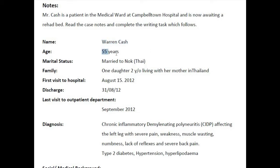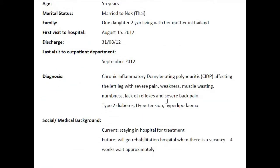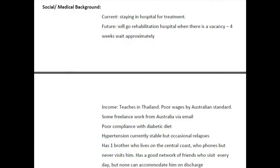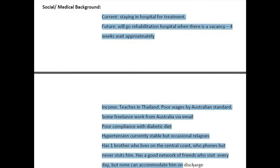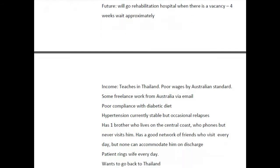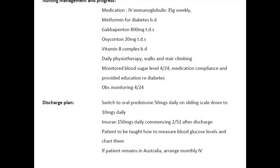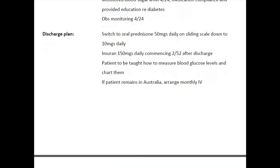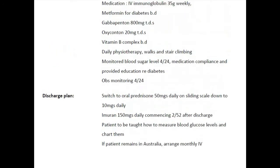Let us look into the case note first. The name and age of the patient are important and should be mentioned in the reference part of the letter. The diagnosis is important — you should mention CIPD, diabetes, hypertension, and hyperlipidemia, but more importance should be given to CIPD. Regarding the social and medical background, almost all the information provided is important, but when framing the letter, you should take special care to pick out only the relevant points. This part is the most important along with the discharge plan, and the nursing management and progress section is important too.